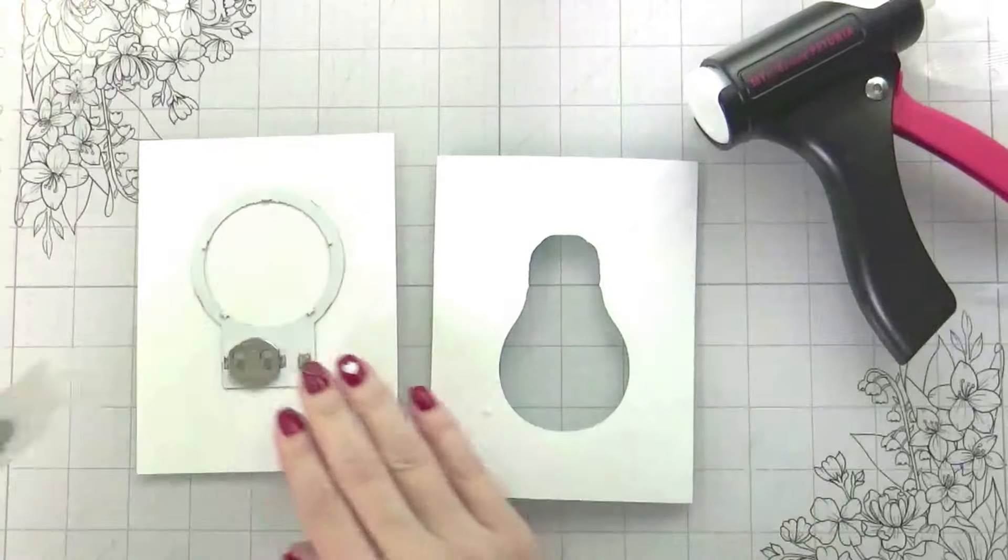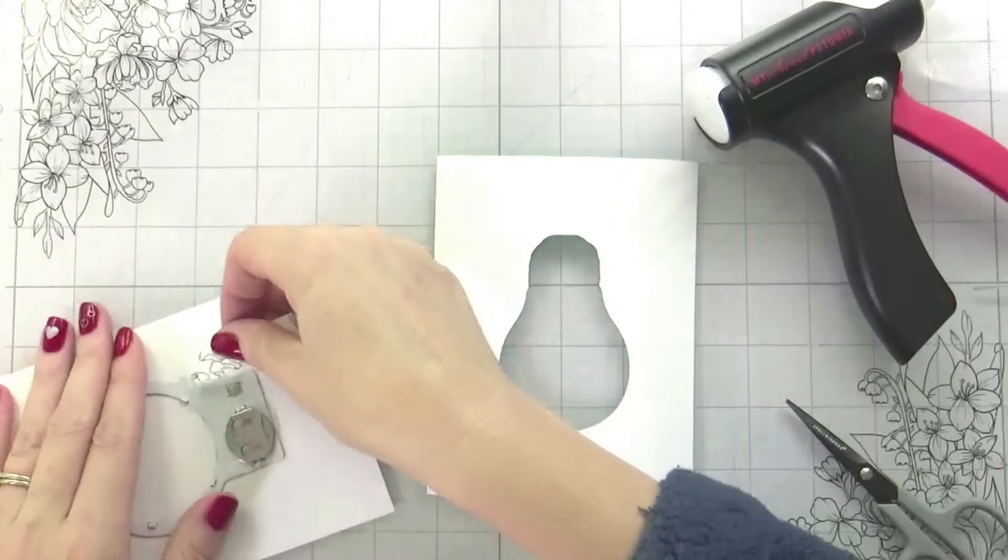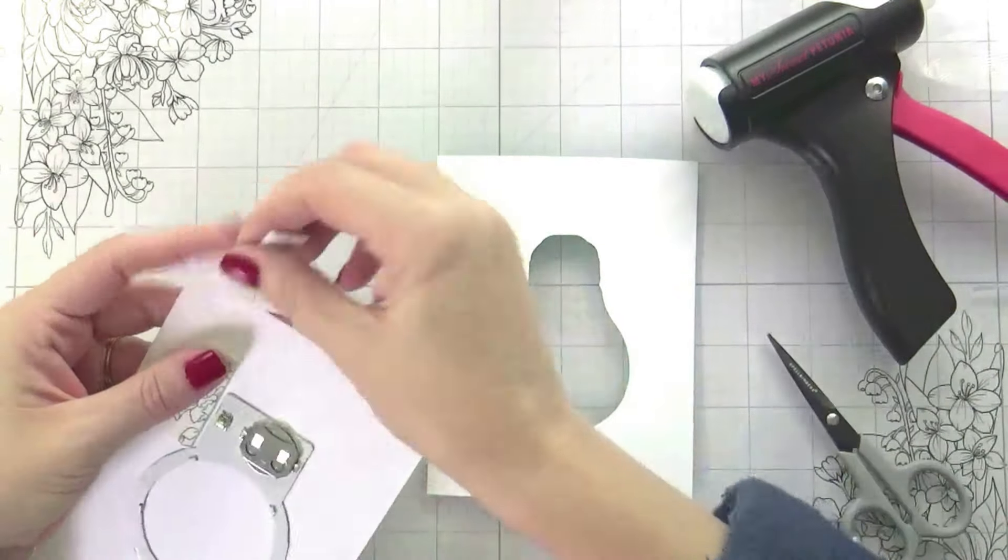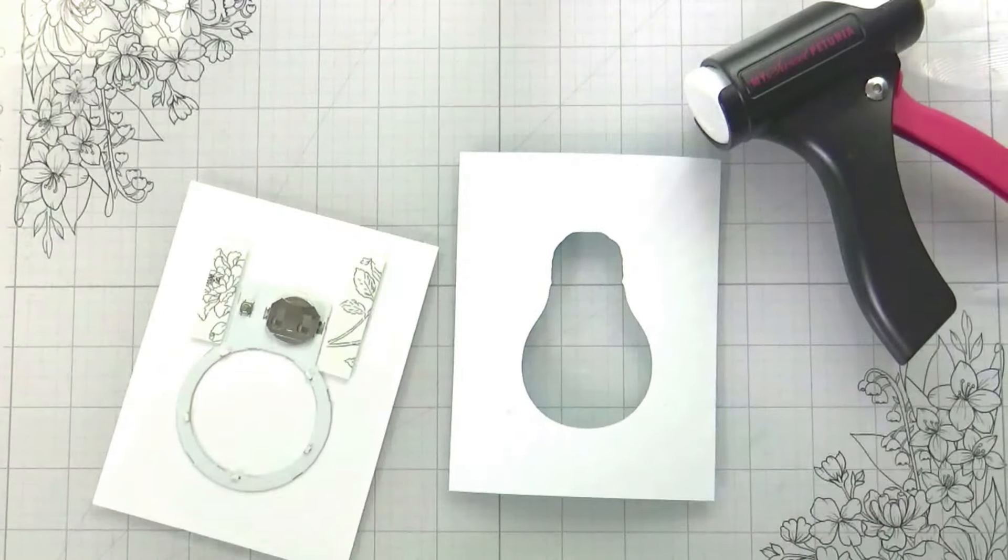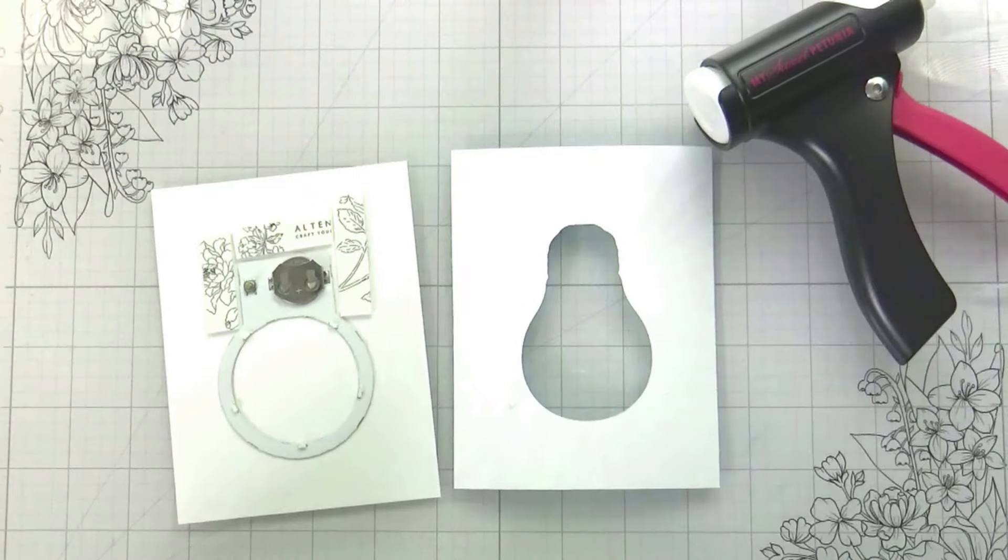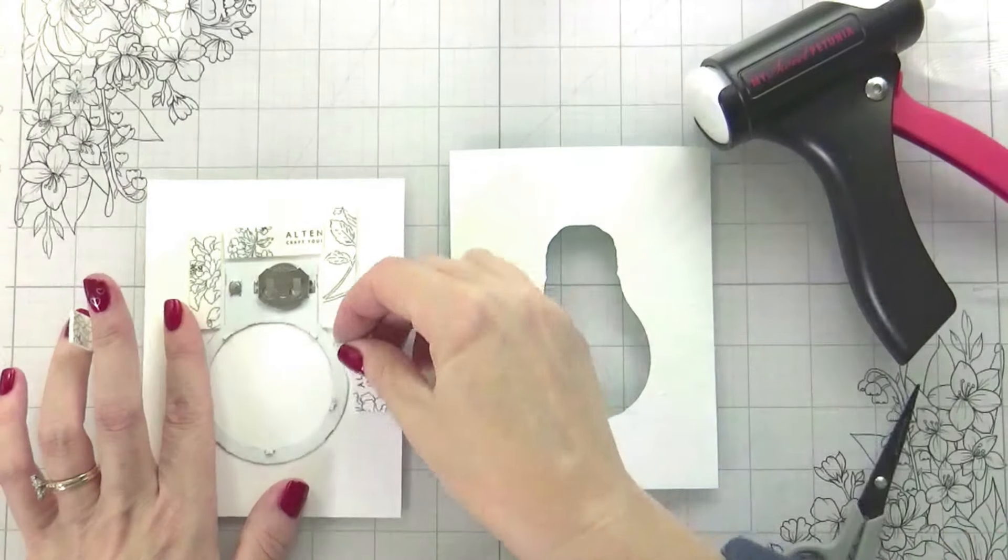Before I can adhere that down, because I do want my shaker elements to be on top of the light bulb, I have to put in my foam tape. The foam tape is necessary for the top of the card to clear the mechanism for the light.